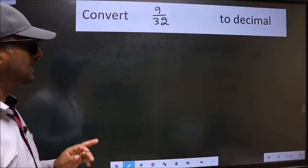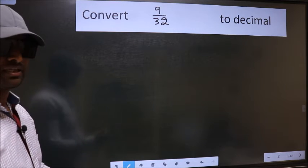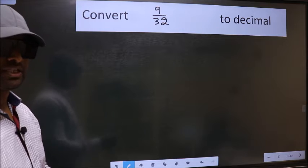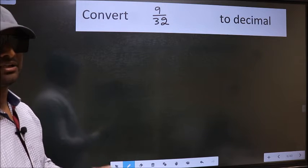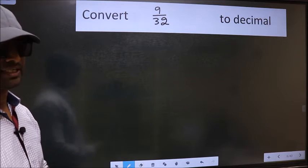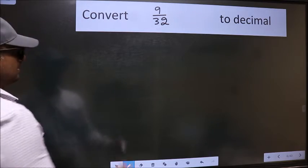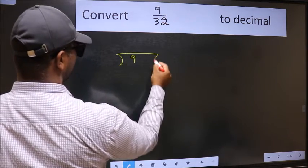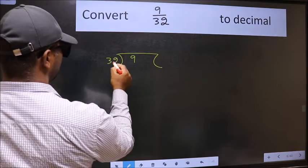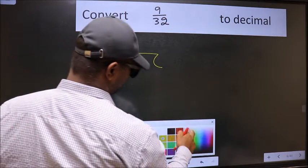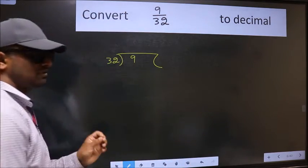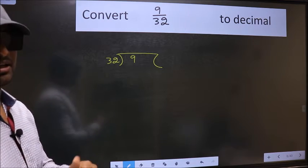Convert 9 by 32 to decimal. To convert to decimal we should divide it, and to divide we should frame it in this way: 9 here and 32 here. This is your step 1. Next.